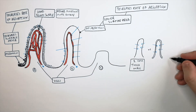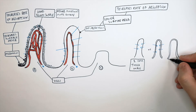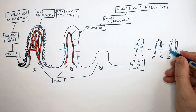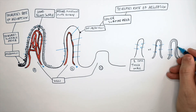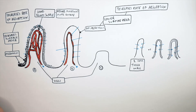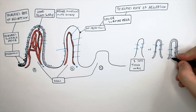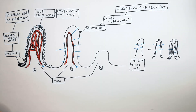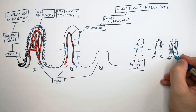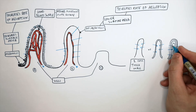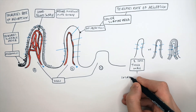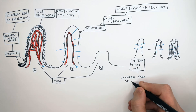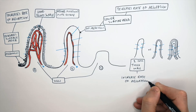If you have a three cell thick wall, the molecules are going to take even longer to diffuse across because they've got to travel a further distance across the membrane. So a one cell thick wall will increase the rate of absorption by diffusion.